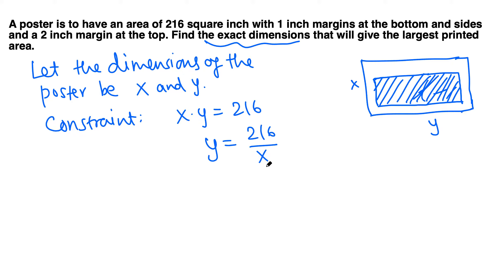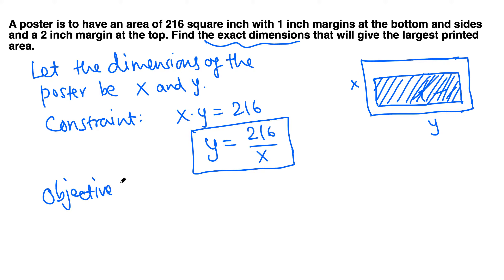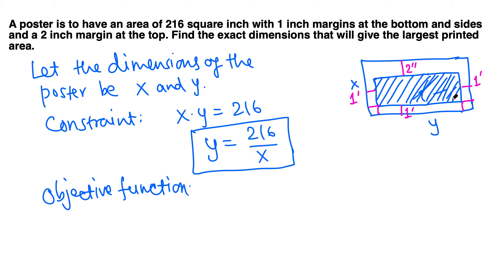Later, once we find x, we come back to find y. Next is the objective function — we want to maximize or minimize something. The poster has 1 inch margins at the bottom and sides, and a 2 inch margin at the top. We want to maximize the printed area inside, so that is our objective function.